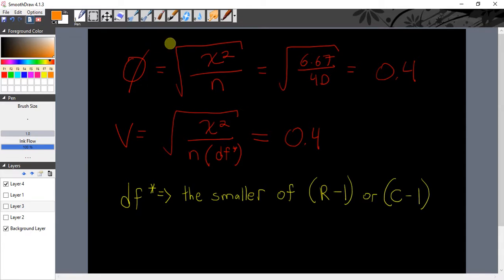I'll just show you quickly here the calculation for phi. This is phi divided by the sample size, which is 6.67 divided by 40 to the power of 0.5. That's our root. And it comes out to being 0.4. And if you're going to do Cramer's V, there's just a small addition. It's this right here. It's DF with an asterisk. It's going to be multiplied by N in your denominator.